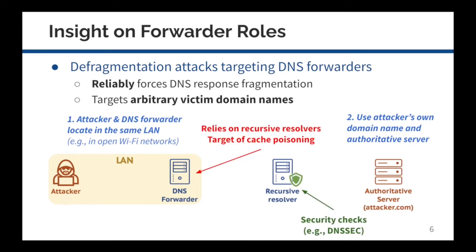The key insight which makes the attack possible is that DNS forwarders typically rely on the integrity and security checks of upstream resolvers, and hence do not perform additional checks on the responses they receive. While the upstream resolver can be immune, the attacker has a chance to tamper with responses that are sent back to the DNS forwarder.